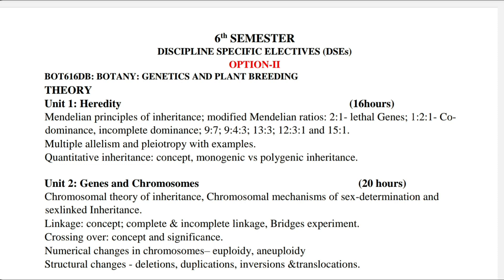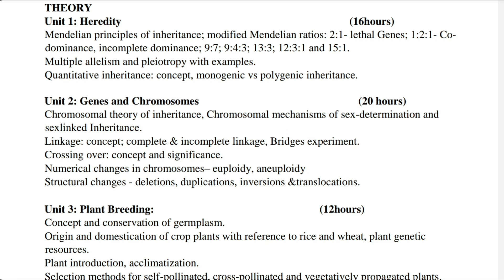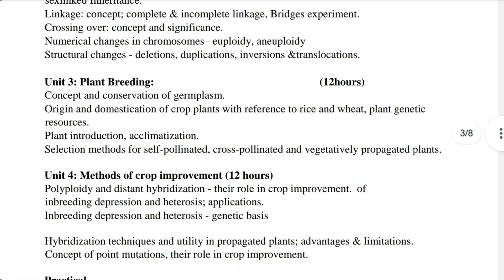This is for BG 6th Semester, University of Kashmir. It comes under Discipline Specific Elective courses and is option second of core botany. You have four units: Unit 1 is Heredity, Unit 2 is Genes and Chromosomes, Unit 3 is Plant Breeding.